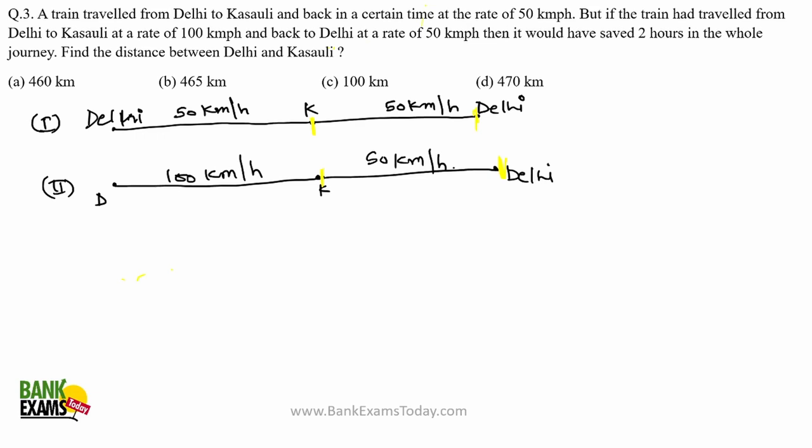But if we look at the Delhi-to-Kosoly segment, there is a difference in speed. So the time difference we observe is caused by this segment only — the Delhi-to-Kosoly segment. This segment alone is responsible for the two-hour time difference.